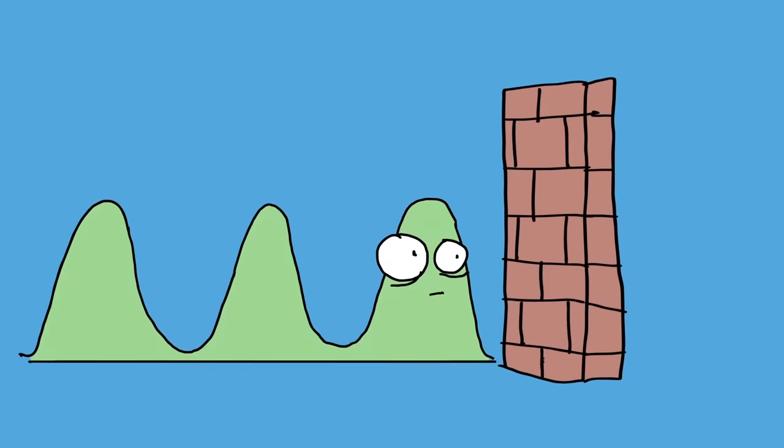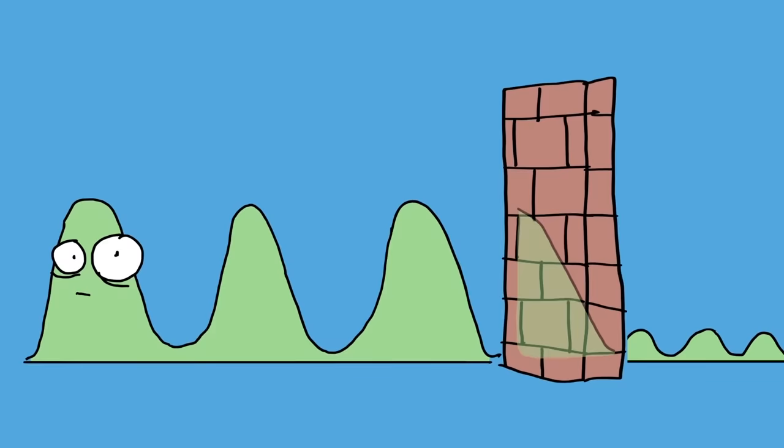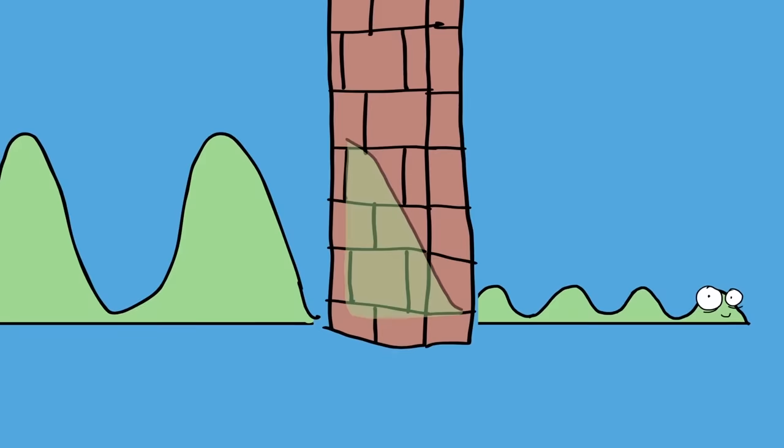Now, when this wave hits the barrier, unlike what a particle would do, which is get 100% rebounded, a tiny, tiny fraction of the wave seeps through. Now, because this wave represents the probability of an electron being there, there is a tiny, tiny probability that the electron will end up being there.